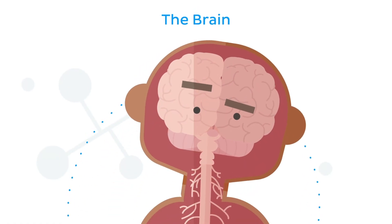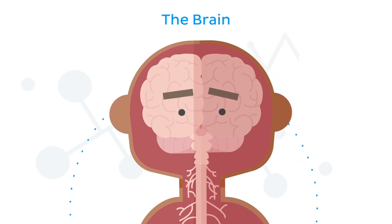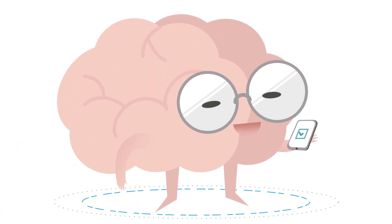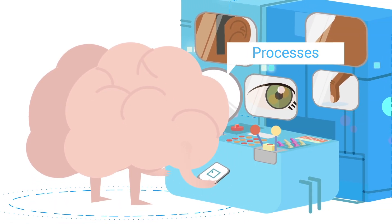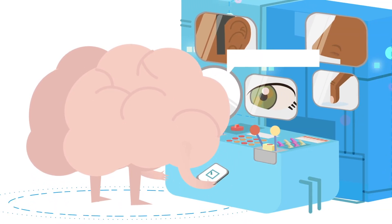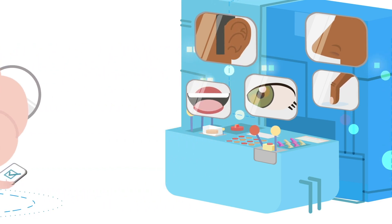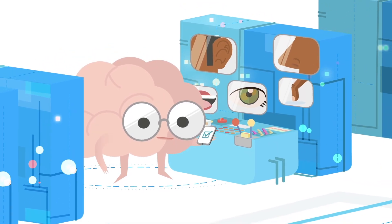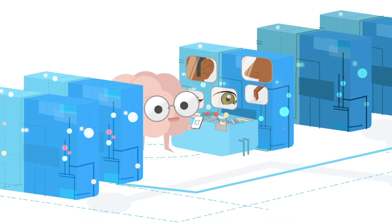Before I go into how you should easily learn the parts of the brain, let me give you a bit of information about this amazing organ. The brain is a very important organ of the nervous system, and together with the spinal cord makes up the central nervous system. This outstanding organ controls almost every function of the body. It processes, integrates, and coordinates the information received from the sense organs, and makes decisions about the instructions to be sent to the rest of the body. To put it in simple terms, the brain is like our mega supercomputer.